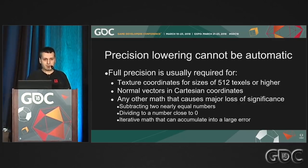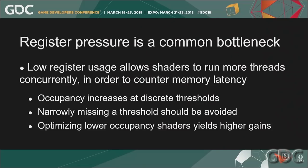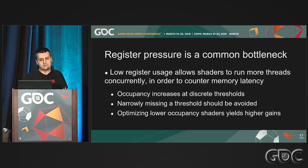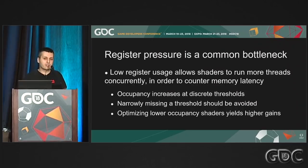Register pressure is a common bottleneck. You optimize for it by increasing GPU occupancy, which increases at discrete thresholds of VGPR usage. If you narrowly miss one of these thresholds, you want to spend the effort to get on the right side. Targeting shaders that are particularly VGPR heavy means you're targeting the right bottleneck and are likely to see higher percentage gains.